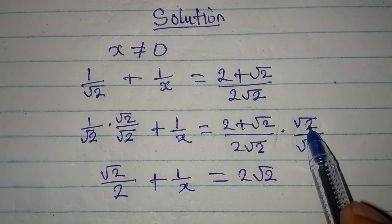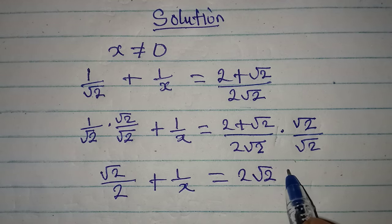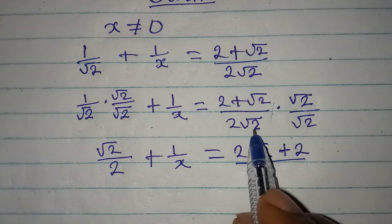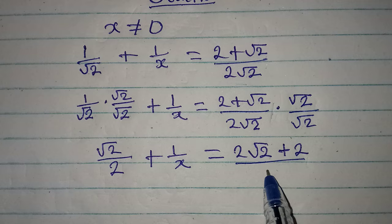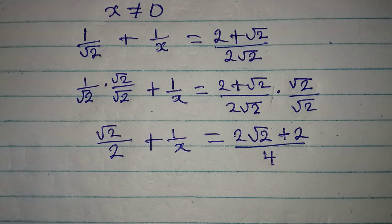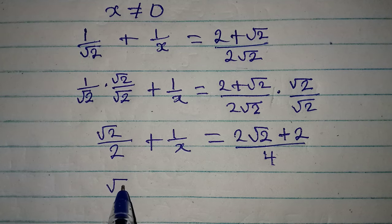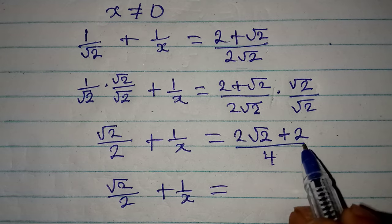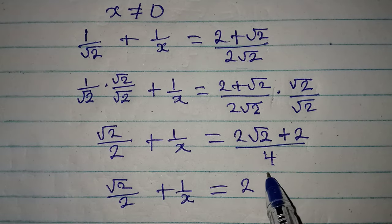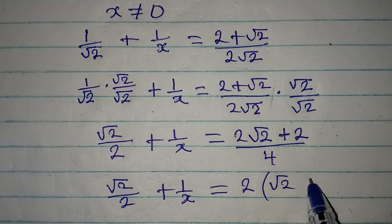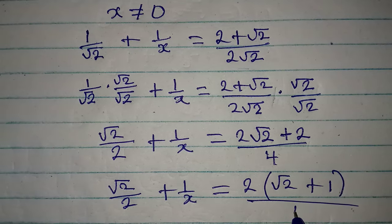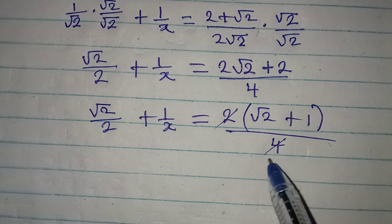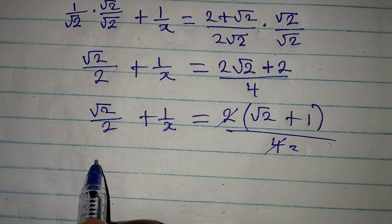Then plus 1 over x equals — root 2 multiplies the numerator giving 2 root 2, plus 2, all divided by root 2 times root 2 which is 2, then times 2 gives 4. Now we can proceed. We have root 2 over 2 plus 1 over x equals — 2 is common, so bringing out 2 we have root 2 plus 1 over 4. Mind you, 2 goes into 4 twice.